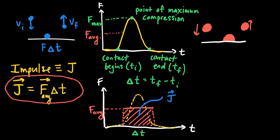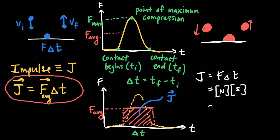Looking at the equation for impulse, J equals F times delta-T, we could represent the units as newtons times seconds. However, for reasons we'll see shortly, the units we will actually use for impulse are kilograms times meters per second.